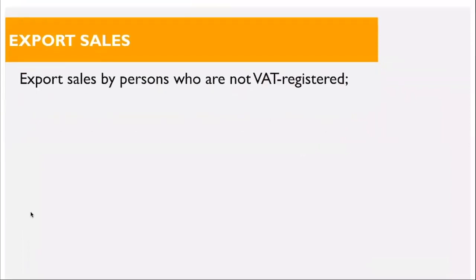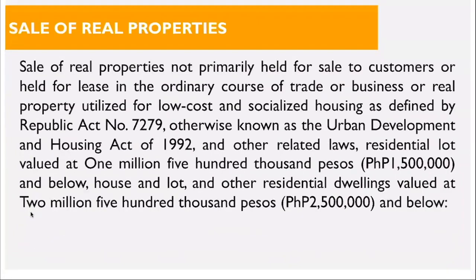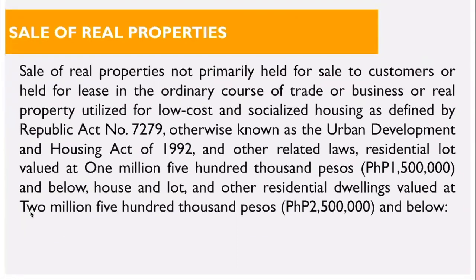Letter O covers export sales. Export sales by persons who are not VAT-registered are exempt. Under the destination principle, exportation is generally exempt from business taxes. Letter P covers the sale of real properties — specifically, real properties not primarily held for sale to customers or held for lease in the ordinary course of trade or business, or real property utilized for low-cost and socialized housing, and residential dwellings valued at P2,500,000 and below.